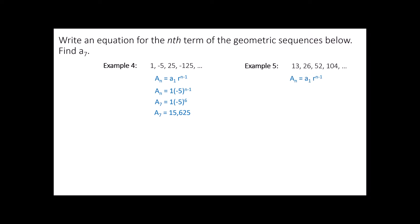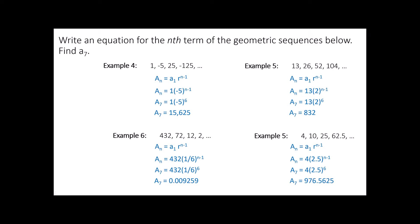Here's another. I started at a 13. I multiplied by the 2 over and over again. 6 times gives me 832. Try this one. We start off at a 432. We're going to multiply it by 1 sixth repeatedly. Since we want the value of the number in the 7th position, we're going to start at 432 and multiply by 1 sixth 6 times, which is rounded off .009259. Last one. 4, 10, 25, 62.5. I think we're multiplying our 4 by 2 and a half repeatedly. To find the value in position 7, we're going to do 4 times 2 and a half 6 times, giving you this value.